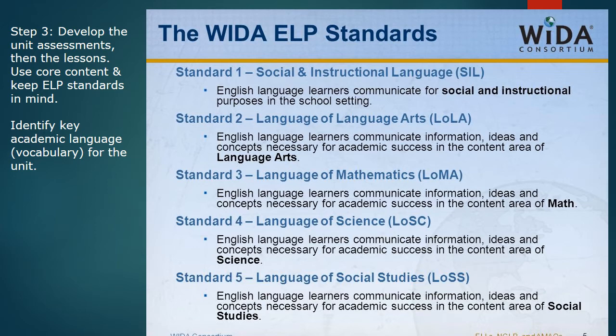Now you know the student's ACCESS score and have a general idea of what those scores mean — let's start planning. As you plan your unit or lesson, begin with the assessment first. If you plan out the assessment first, you have a strong idea of what you want students to do with the content and how you expect them to perform. By starting with the end in mind, you'll be especially careful to notice academic language, which can be a real barrier for ELL students. You'll also be able to think about the ELP standards — how language will be used within the classroom during this unit — so that when assessment time comes, they're prepared.